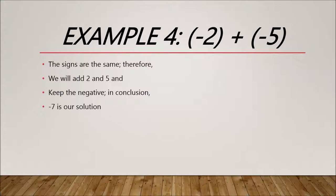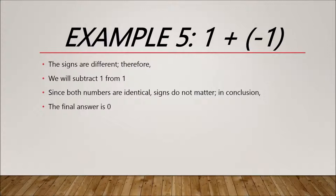Example 5: 1 + -1. The signs are different, so we subtract 1 from 1. Since these two numbers are identical, we'll conclude that 0 is the solution. We don't need to worry much about the signs.